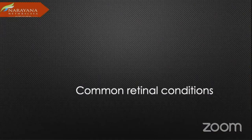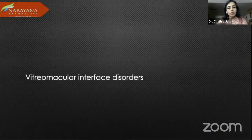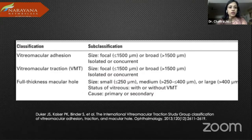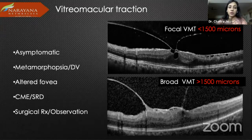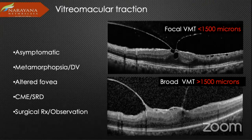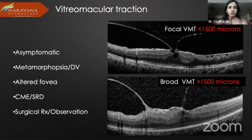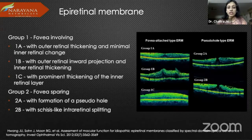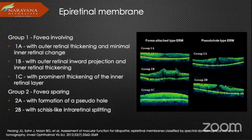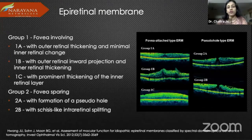Coming to common retinal conditions, going on to vitreo-macular interface disorders — VMT is extremely important and is often not picked up clinically because it is very subtle. OCT is definitely a great tool here. You can have focal or broad-based vitreo-macular traction. It could be asymptomatic, or the patient could have metamorphopsia and an altered fovea on clinical examination. Treatment is based on symptoms. Epiretinal membrane has different classification groups based on the OCT itself, all available in literature, and is very useful to determine whether a patient needs surgical management.